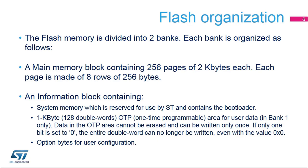The flash memory is divided into two banks, each having a main memory block containing 256 pages of 2 kilobytes each. Each page is made of 8 rows of 256 bytes. Each main memory block has an information block, which contains three parts. The first part is the system memory, which is reserved for use by STMicroelectronics and contains the bootloader.